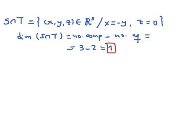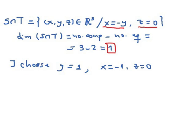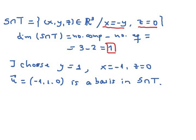To find that vector, we choose one satisfying the equations defining the intersection. Choosing Y equal to 1, we get X equal to minus 1 and Z equal to 0. So the vector U equals (minus 1, 1, 0) is a basis in S intersection T, which is the answer we were looking for.